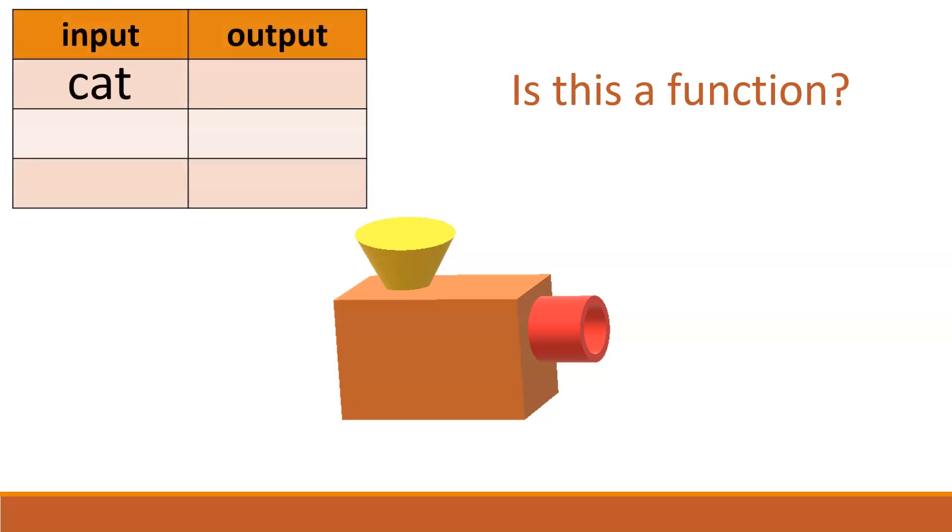Is this a function? Well, let's see. Input of cat, output of c, input of key, output of k, but cup also gave us an output of c. So is that a function or not?